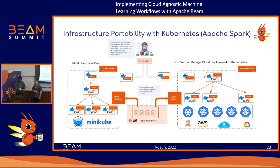In terms of deploying the infrastructure, we maintain a Spark manifest in a repo. The developer, data scientist, or ML engineer can grab the latest Spark manifest and the deployments they want to make, apply the same thing to local, and apply the same Spark or Flink manifest to deploy all the components needed. Then you submit your job to the endpoint — you have the cluster running and you submit through the job service runner that allows you to write portable code.